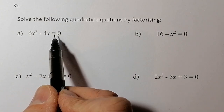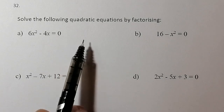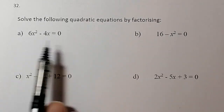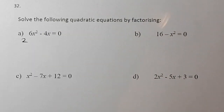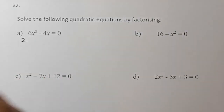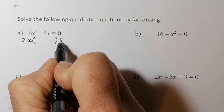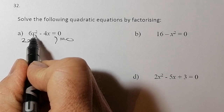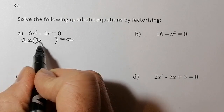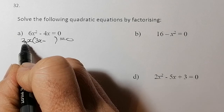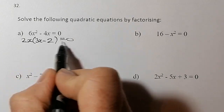The first one is 6x² minus 4x equals zero. When I look at anything to factorize, I first look for a common factor. Both terms are on the two times table, and both have x's, so my highest common factor is 2x. Two x times 3x gives me 6x², and 2x times 2 gives me 4x, so I get 2x(3x − 2).